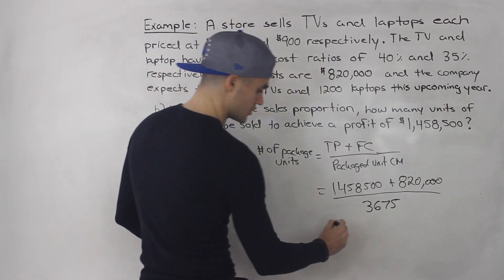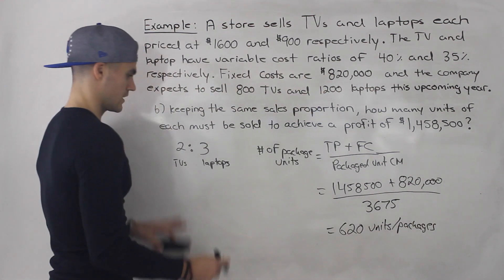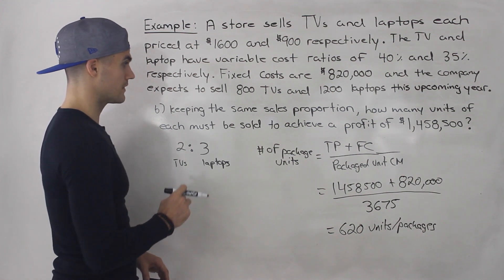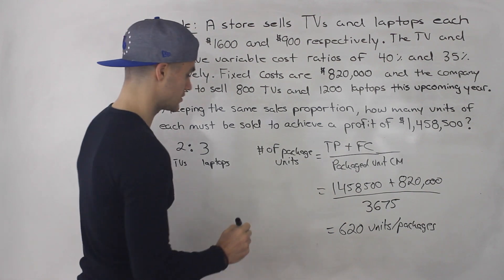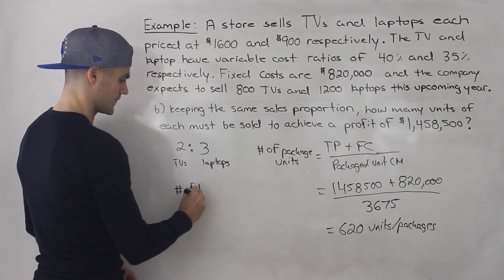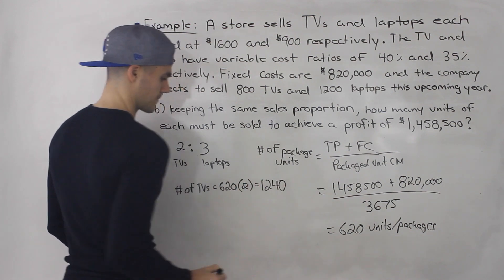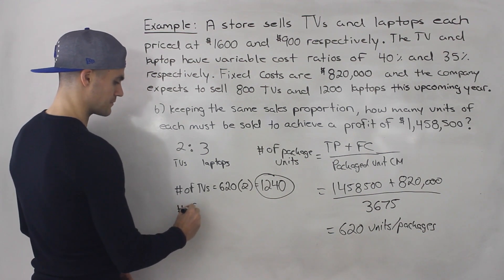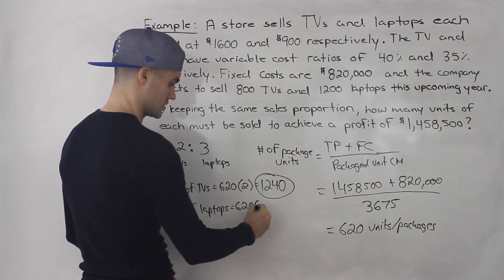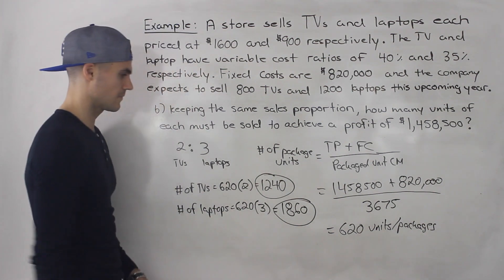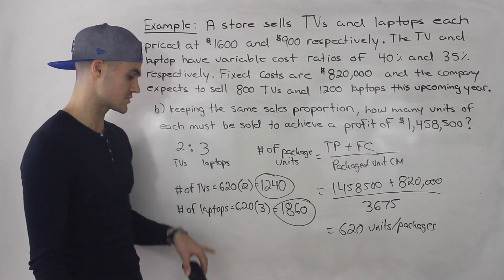Doing that calculation gives us 620 packages. But since they're asking how many units of each product must be sold, we convert: 620 packages times 2 TVs per package equals 1,240 TVs. And 620 packages times 3 laptops per package equals 1,860 laptops. So 1,240 TVs and 1,860 laptops must be sold — that's the answer to Part B.